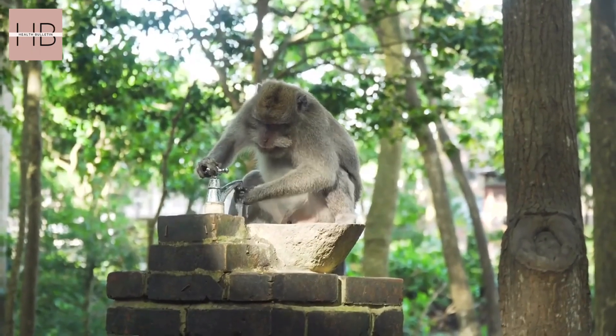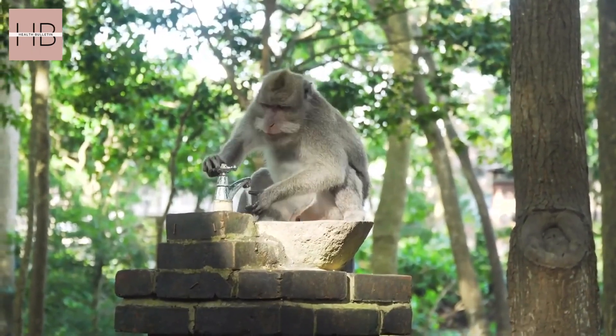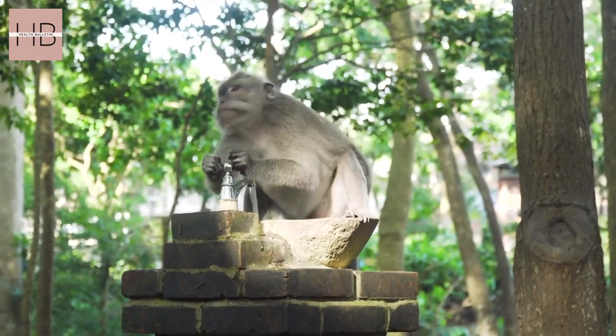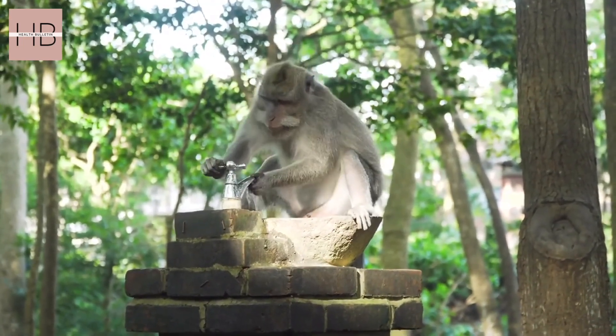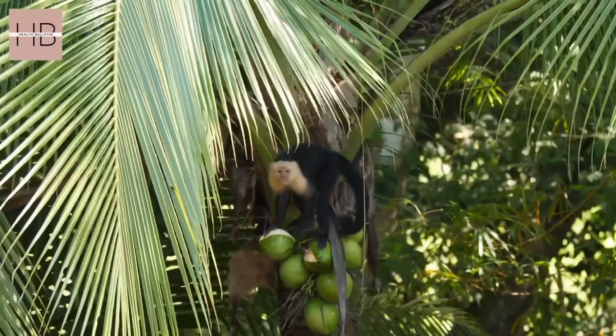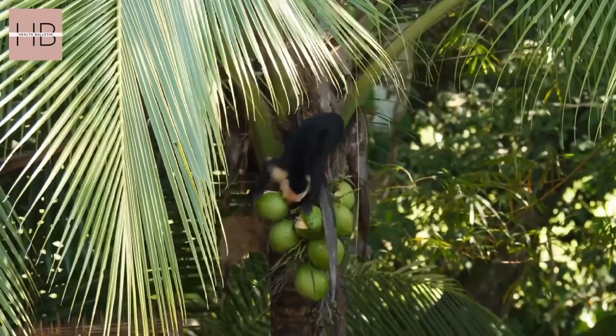Researchers gave rhesus macaques aged an average of 22 years, the human equivalent of around 65, an injection of klotho, raising their levels to that of juvenile monkeys. Following the injection, they were about 20% better at navigating difficult mazes to find a treat. Could klotho work the same way in humans? Time will tell.